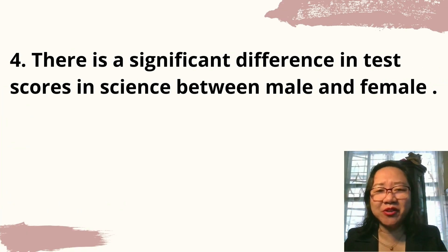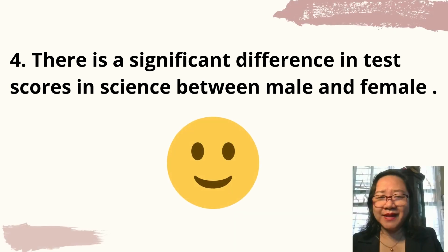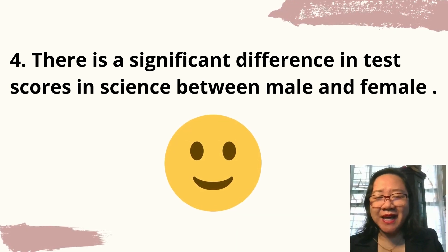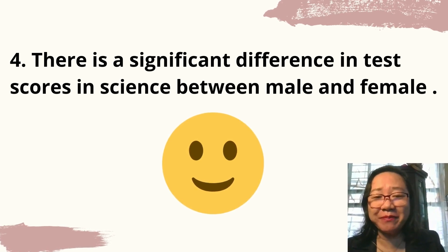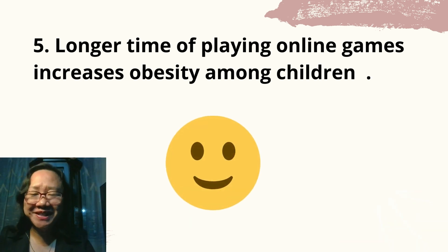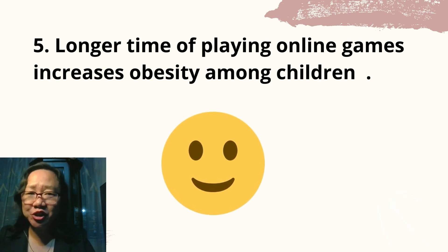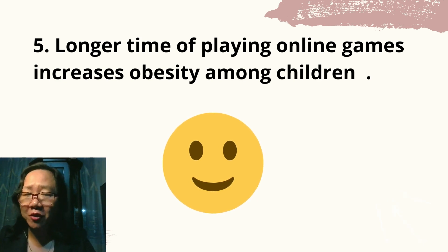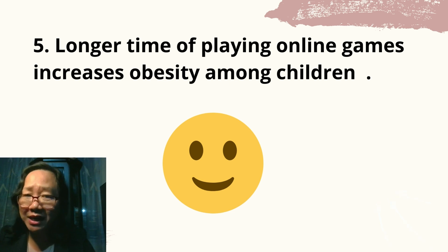Number 4: there is a significant difference in test scores in science between male and female. Answer: it's a good hypothesis and an example of an alternative hypothesis. Number 5: longer time of playing online games increases obesity among children. Answer: it's a good hypothesis because it shows the relationship between the independent variable (time playing online games) and the dependent variable (obesity), and follows the if-then format.